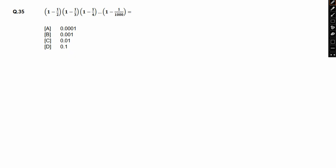1 minus 1 by 2 into 1 minus 1 by 3 into 1 minus 1 by 4 and so on till 1 minus 1 by 1000 equals what? Let's take a look. This shouldn't really be an issue.